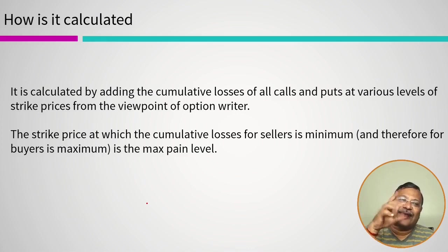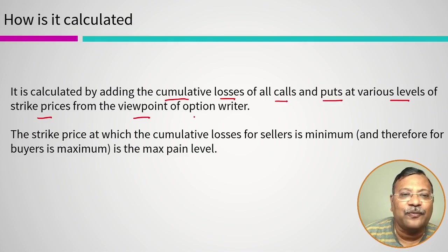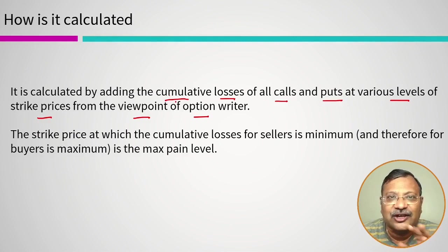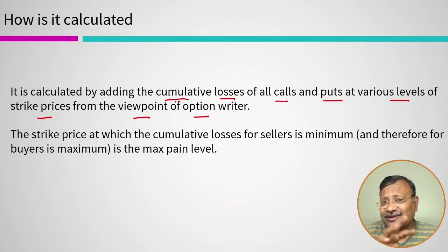How is max pain calculated? It is calculated by adding the cumulative losses of all calls and puts at various strike prices from the viewpoint of the option writer. We compute the cumulative losses of all calls and all puts at various strike prices from the option writer's perspective.